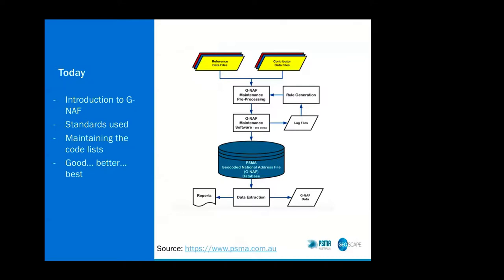I'll give you a quick intro as to what GNAF is — that's the Geocoded National Address File — discuss some of the standards used in it, describe the process for maintaining codelists that currently goes on today. It's not much of an involved process, and that's why we're looking at describing a proposed process for codelist governance in the future. Why the change will become evident as I go through the presentation.